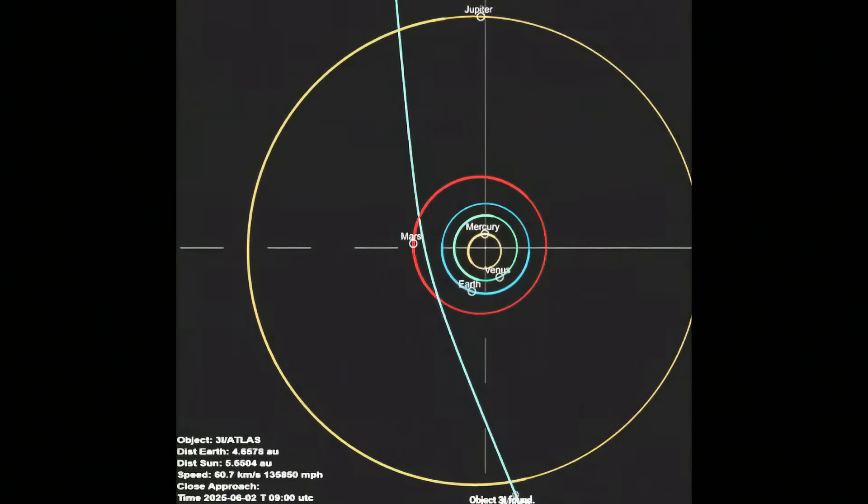A path of purpose. When an object travels for millions or even billions of years between the stars, you'd expect its path to be random. It should come in at any old angle from any direction. But Three Hour Atlas is different. Its trajectory is suspiciously neat. The thing is, it's traveling within the ecliptic plane, the flat, pancake-like disk where all the planets in our solar system orbit.